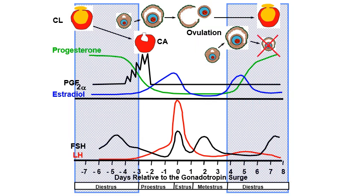After metestrus is the diestrus stage. During diestrus, a fully functional corpus luteum is present. Because of the presence of the fully functional CL (yellow body), there is a high level of P4 (progesterone) seen in the blood of the animal during this time.